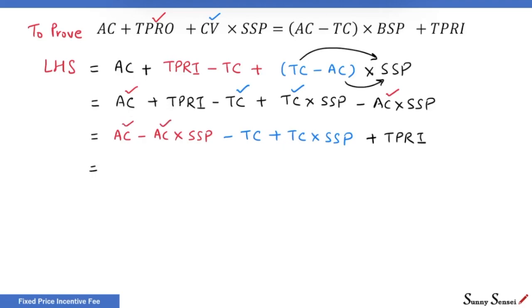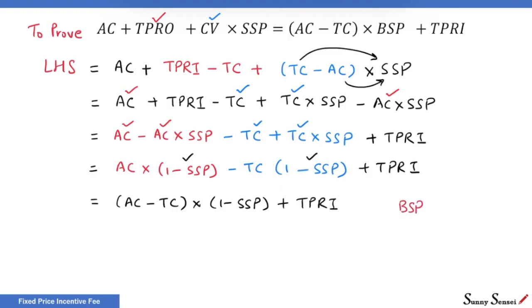Plus target price. Actual cost is common in the first two terms. Target cost is common in the next two terms. Plus target price. Now, 1 minus seller's share of risk in percent is common in the first two terms. Therefore, we know that buyer's share of risk in percent plus seller's share of risk in percent equals 1.